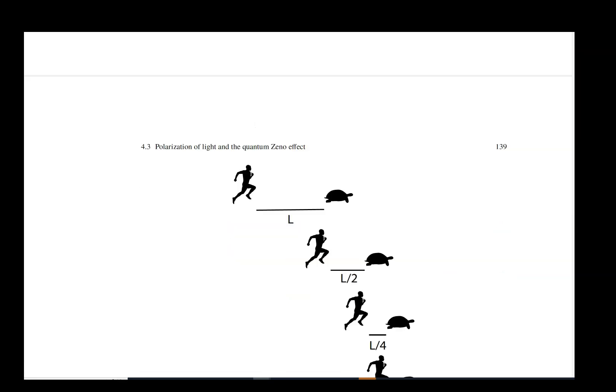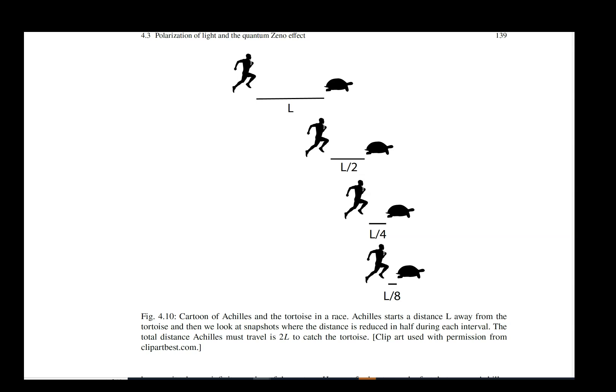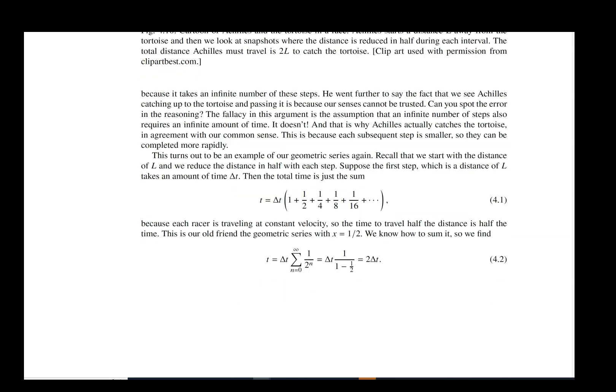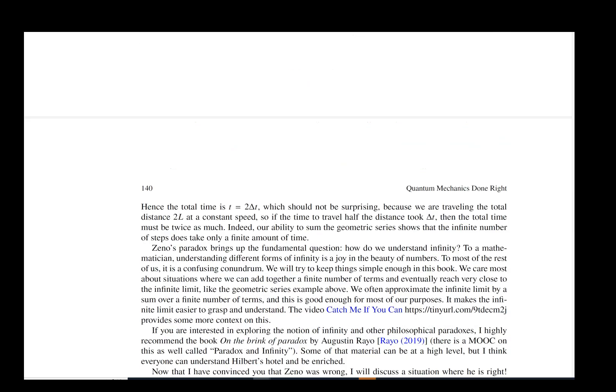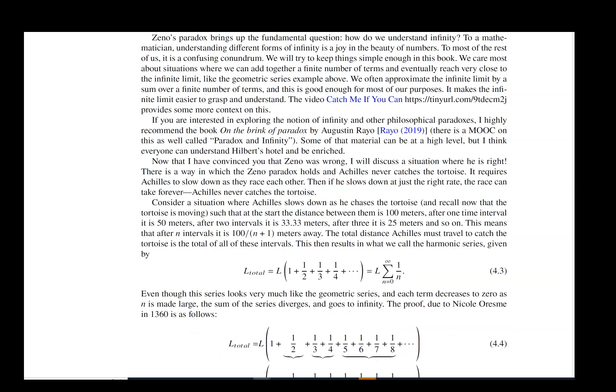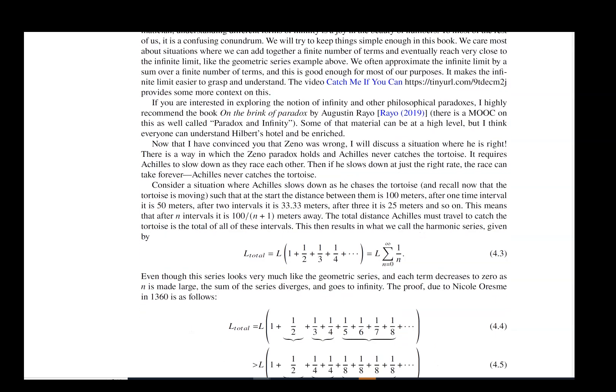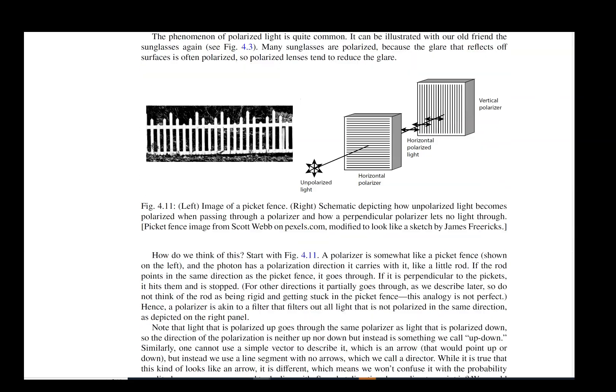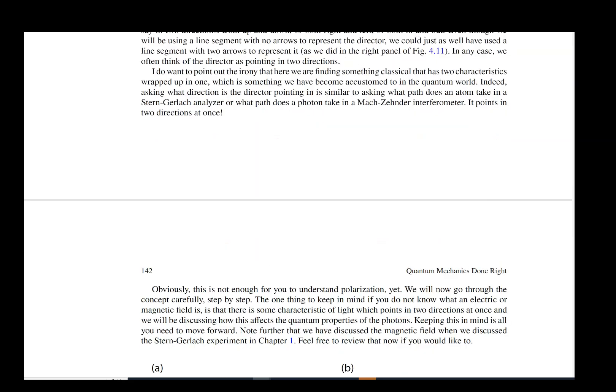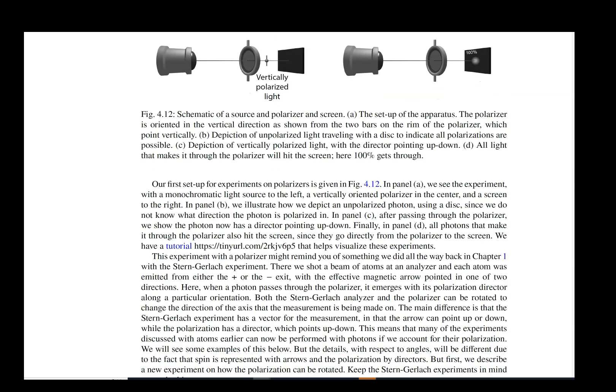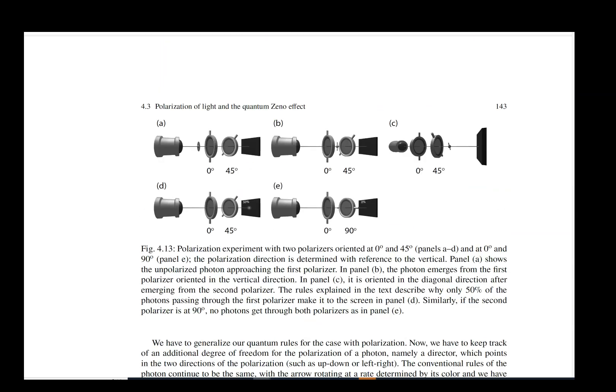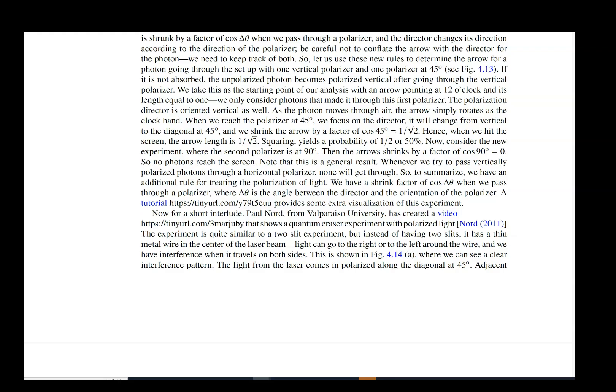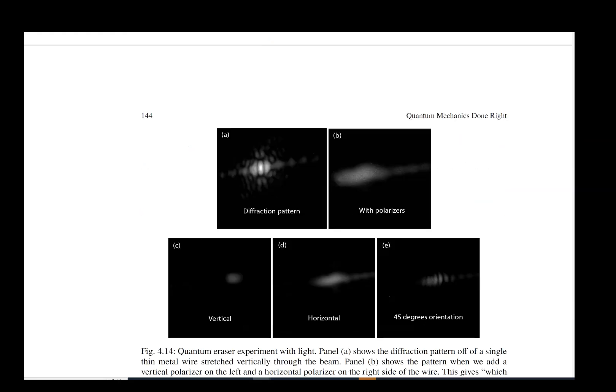In order to understand how you can see something without shining any light on it you need to understand the quantum Zeno effect. We first talk about the philosopher Zeno and his notions of infinity and how you can get into what is called the quantum Zeno effect, and we typically do this with polarization.